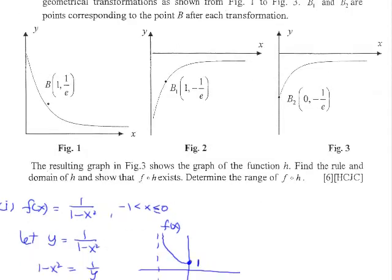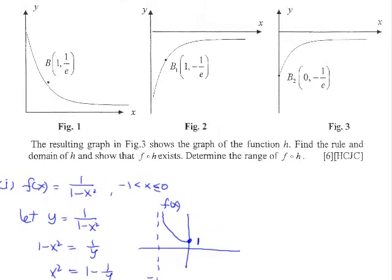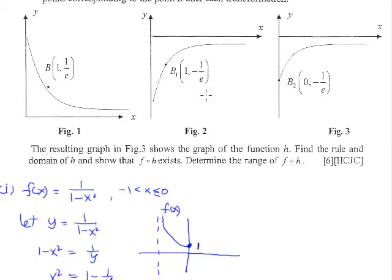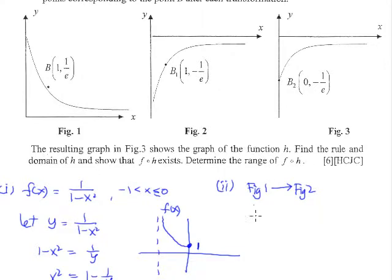Let's take a look at this series of transformations. From figure 1 to figure 2, it is rather obvious that it is a reflection along the x-axis. So figure 1, the function is e to the power of negative x, and to figure 2, which is the reflection along the x-axis, it is a negative f(x) type of transformation. So it becomes negative e to the power of negative x.